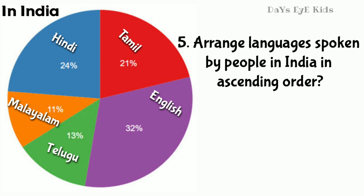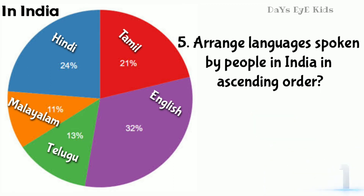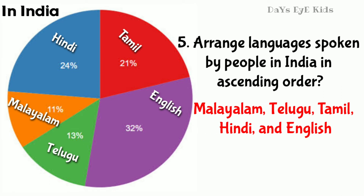Arrange the languages spoken by people in India in ascending order. Malayalam, Telugu, Tamil, Hindi and English.